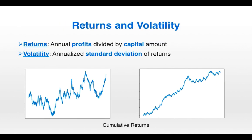The simplest performance metrics are returns and volatility. Returns are the annual profits divided by the capital amount. Volatility is the annualized standard deviation of returns. I have two simulated cumulative returns series — the one on the left clearly has more volatility than the one on the right. If I were to ask you which one you'd rather invest in, everyone's going to say the one on the right. While they both have high returns, because the one on the right has lower volatility — a lower standard deviation of returns — that is preferable.